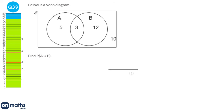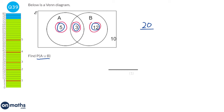We're finding the probability of A or B. 'A or B' means it can be in A, in B, or in both. We add 5, 3, and 12 together to get 20. The total number of elements is 20 plus the 10 outside, giving 30. So the probability is 20 over 30, which simplifies to 2 over 3.